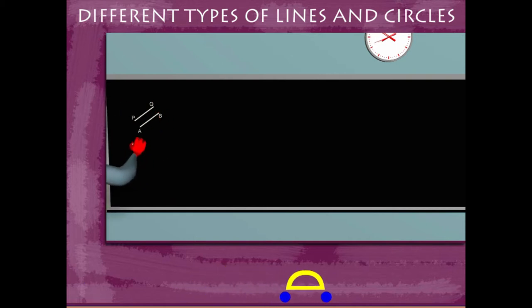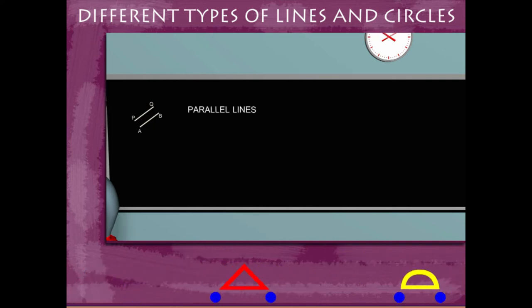He draws two line segments PQ and AB. They are parallel lines because the distance between them remains the same and they never meet.